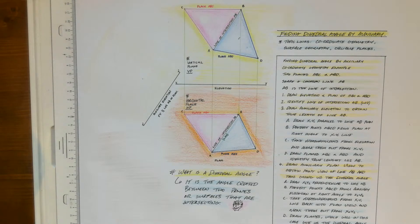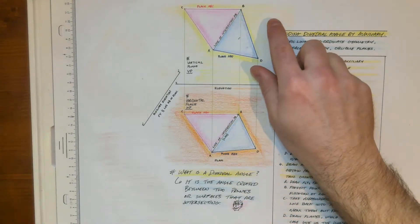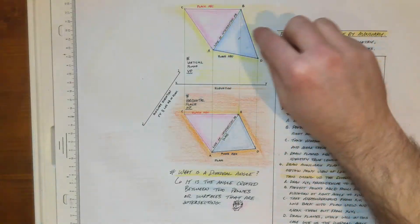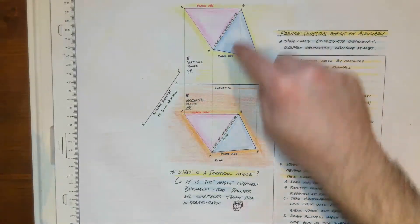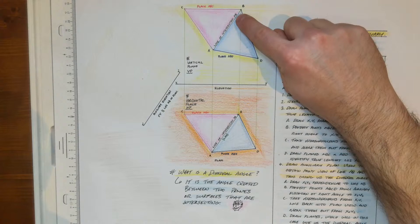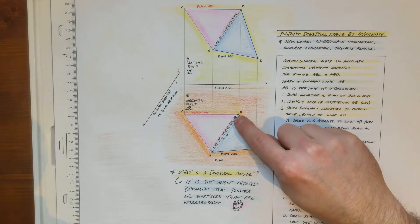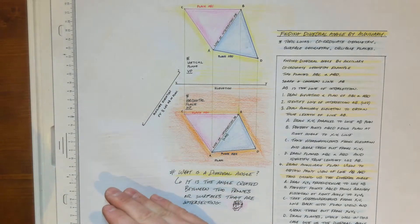What is a dihedral angle? It is the angle created between two planes or surfaces that are intersecting. What we want to do is, once we have our two surfaces set up — and you don't need specific coordinates as long as the two surfaces have a line of intersection — we can proceed to find the dihedral angle. Here I have planes ABC and ABD. The line of intersection is AB, highlighted in both the elevation and the plan view, and we'll be heavily reliant on that line for all subsequent work.